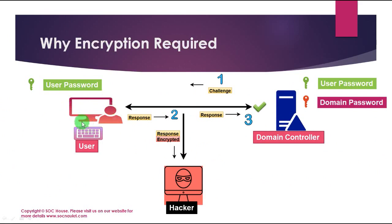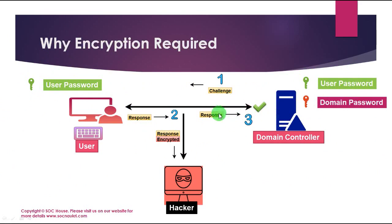The user sends a request to access resources. The domain controller sends a challenge to the user. The user encrypts the challenge using their password hash and sends it back to the server. The server uses the stored user password for decryption. If the decrypted challenge matches the response stored in Active Directory, the user is allowed to login.